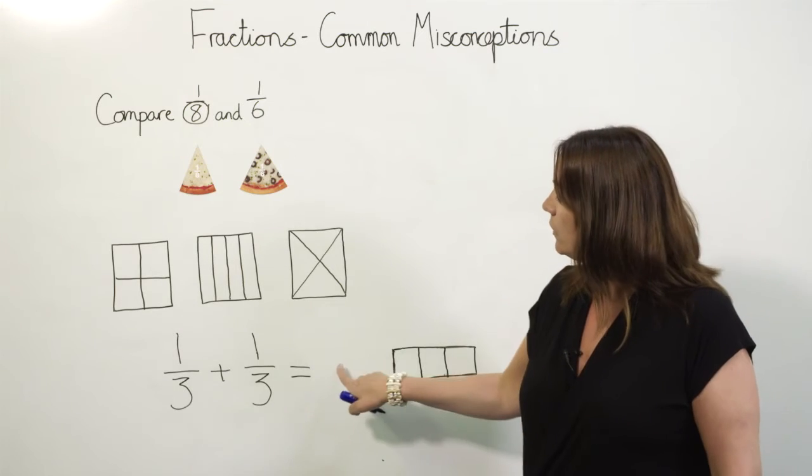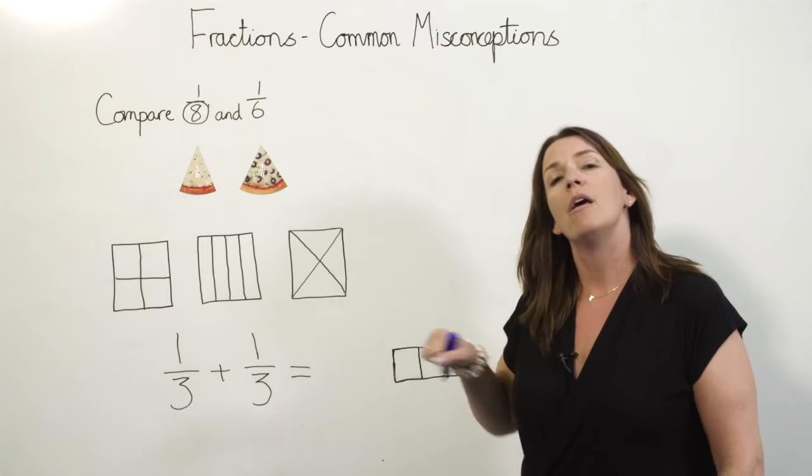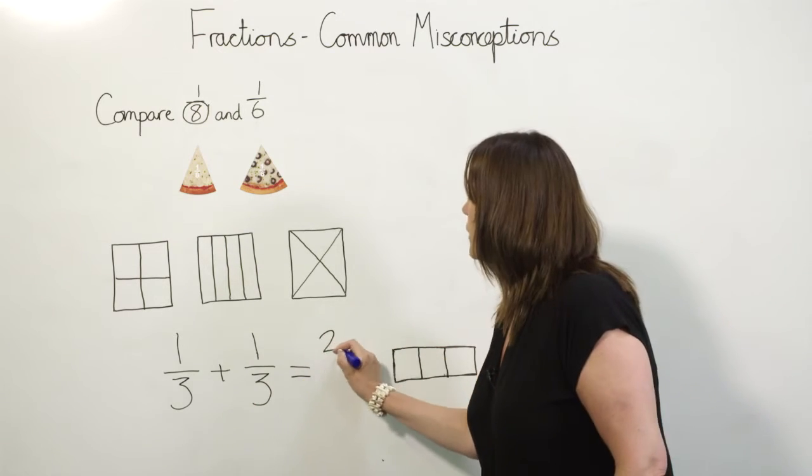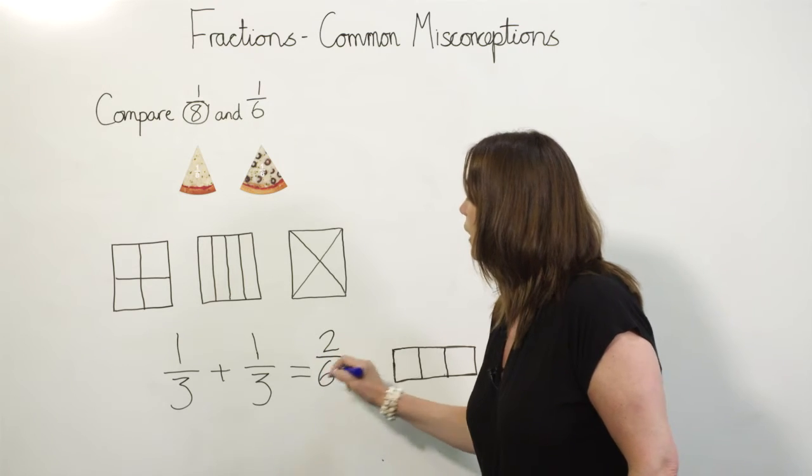And then another misconception is with adding fractions. Many people will think that 1/3 add 1/3 is equal to 2/6 because they've added the numerator and the denominator.